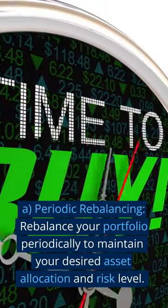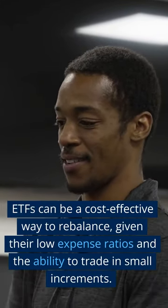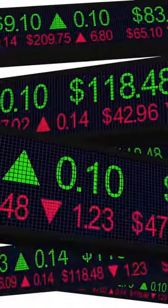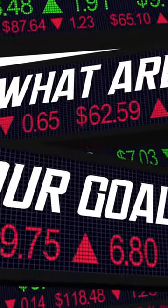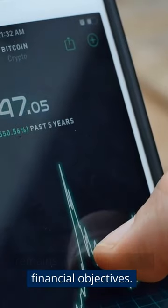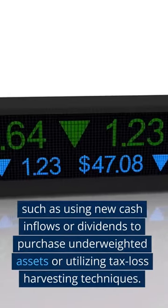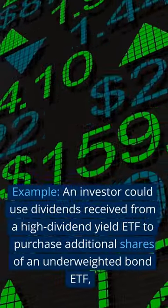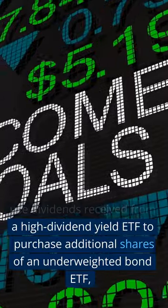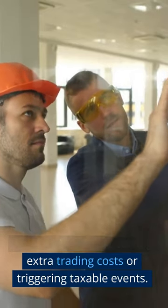7. Portfolio Rebalancing. A. Periodic rebalancing. Rebalance your portfolio periodically to maintain your desired asset allocation and risk level. ETFs can be a cost-effective way to rebalance, given their low expense ratios and the ability to trade in small increments. B. Review investment goals. Regularly review your investment goals and risk tolerance, adjusting your ETF holdings accordingly. This ensures your portfolio remains aligned with your financial objectives. C. Tax-efficient rebalancing. Consider implementing tax-efficient rebalancing strategies, such as using new cash inflows or dividends to purchase underweighted assets or utilizing tax loss harvesting techniques. Example: an investor could use dividends received from a high-dividend yield ETF to purchase additional shares of an underweighted bond ETF, keeping the portfolio balanced without incurring extra trading costs or triggering taxable events.